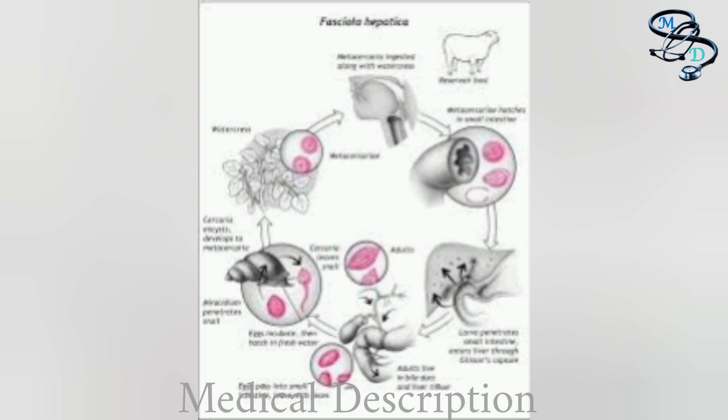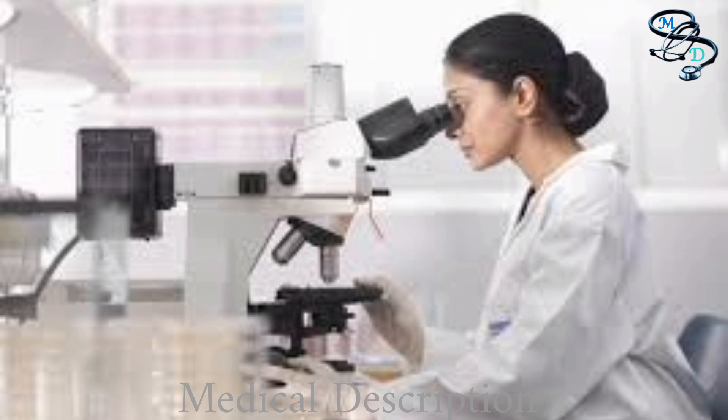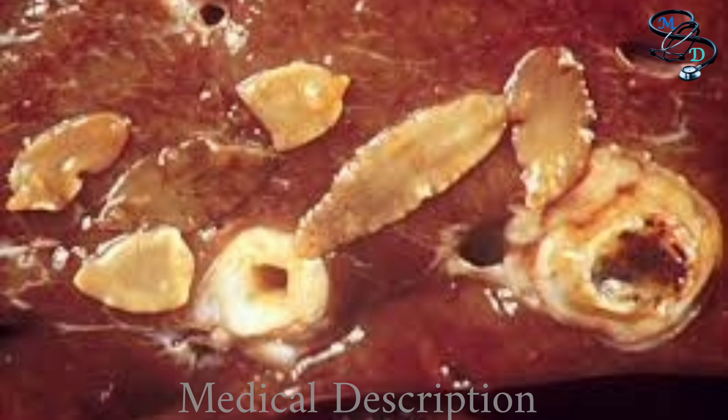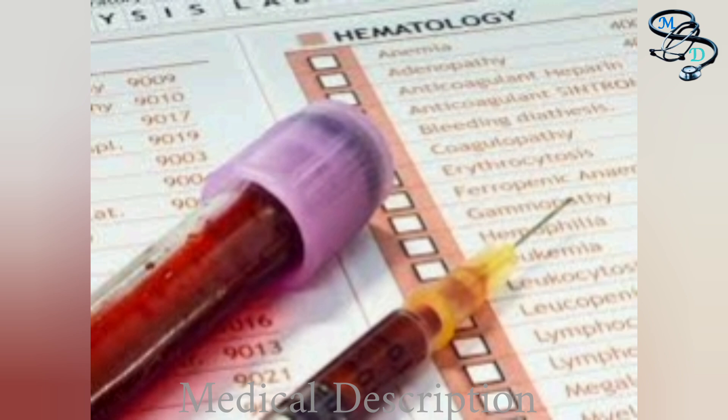Diagnosis is made by finding the Fasciola eggs in stool fecal specimens examined under a microscope. More than one specimen may need to be examined. Sometimes eggs are found by examining the contents of bile. Infected people don't start passing eggs until they have been infected for several months and don't pass eggs during the acute phase. Therefore, early infection must be diagnosed by other means. Even during the chronic phase, it can be difficult to find eggs in light infections. Blood tests, including routine bloodwork and tests that detect antibodies as an immune response to the parasites, can be helpful.